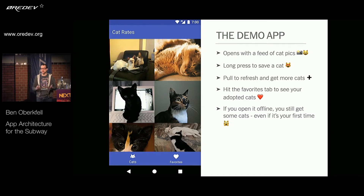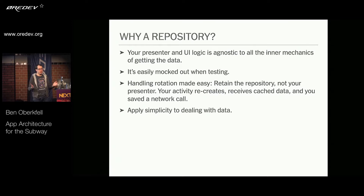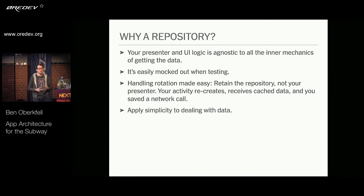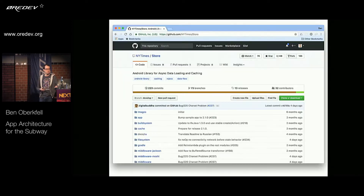What this demo app presents is a use of a repository pattern. Your presenter and UI logic can be agnostic to all the inside baseball of getting data. It can be easily mocked out when testing, so you can pass new data forward in an Espresso test. Rotation is made easy because you can retain the repository but not the presenter. When you rotate the screen, your activity recreates, you pull back your cached data and save yourself a network call. Here at the New York Times we have an open source library called Store that helps give you a way of implementing a repository around ephemeral data.